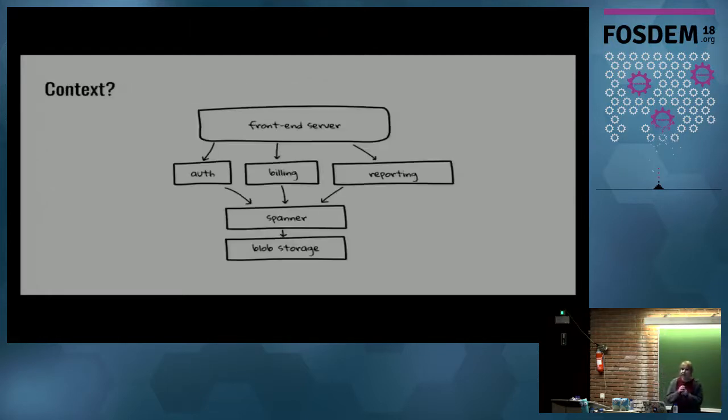So the entire promise of microservices is there should be no tight coupling between different services. But then, how can a low-level service such as the blob storage service tag correctly if they don't know anything about its dependents and their business cases?